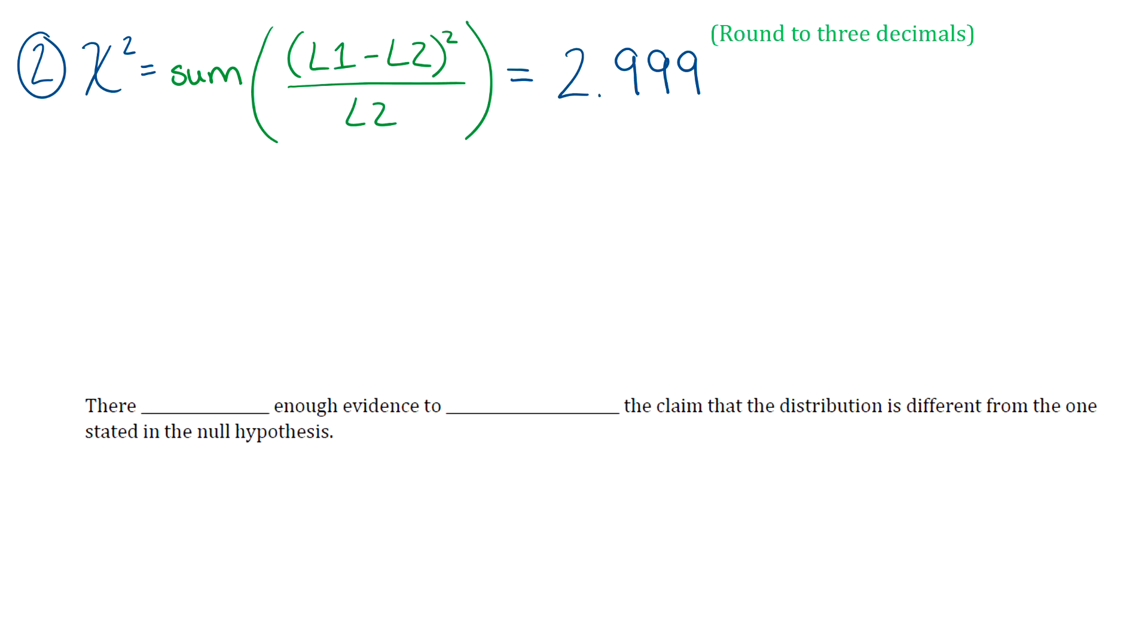Then once you have that, then you're going to use that to help you get your p-value. So your p-value is found by going to 2nd vars. So you get your distributions. And then go down to chi-squared cdf.